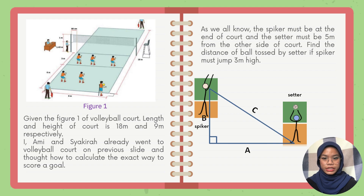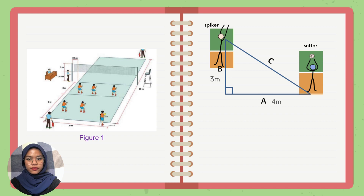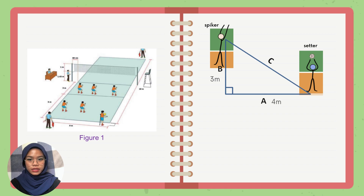Based on the question and figure 1 given, the length of the court is 18m and the height is 9m. In the picture given, the height of the net from the ground is 2.43m. The question states that the spike must jump 3m high at the end of the court and the setter must be 5m from the other side of the court. That means we know the distance between the setter and the spike is 4m. So we can use the Pythagorean theorem to calculate the distance of the ball toss by the setter.